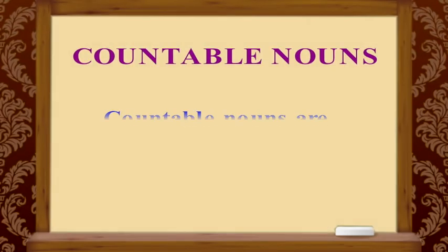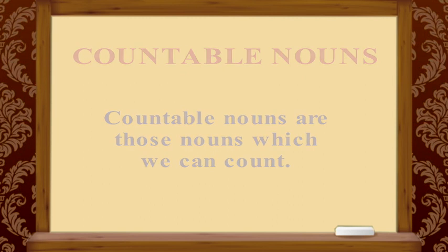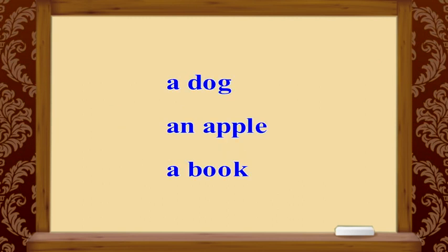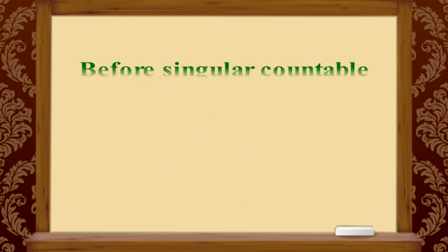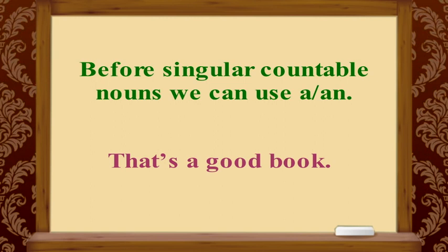Countable nouns are those nouns which we can count. Examples can be a dog, an apple, and a book. Before singular countable nouns, we can use articles a and an. Example: that's a good book.